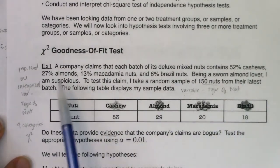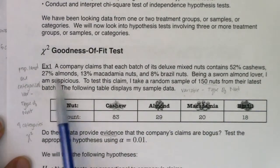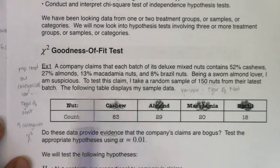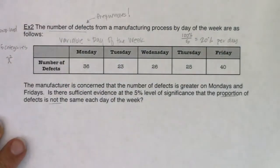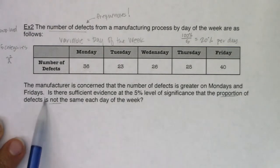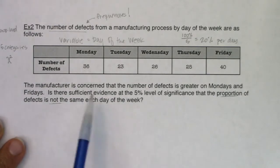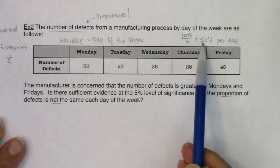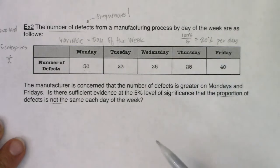That runs very different from our first example where the null proportions were all different — 52%, 27%, 13%, 8% — and were given to you. Here it was implied. Sometimes it's implied, sometimes it's not. When it's implied, take 100%, divide by the number of categories, and see what proportion should be happening for each category.